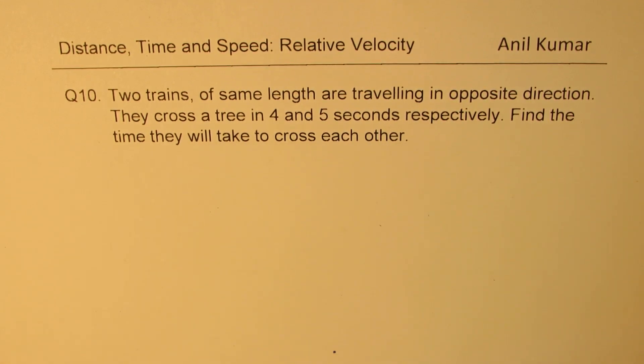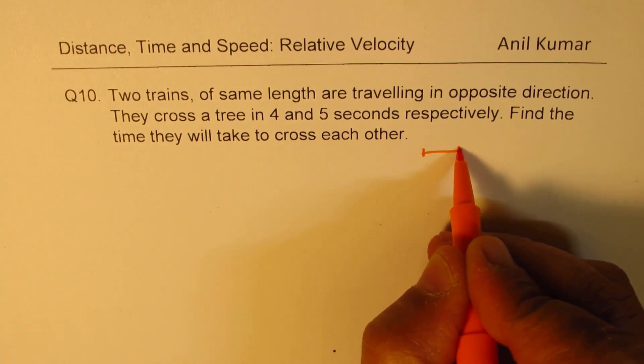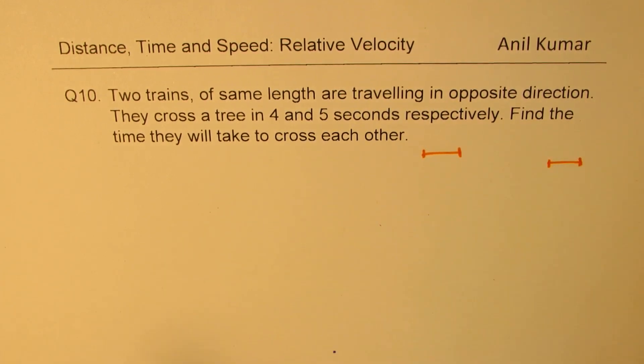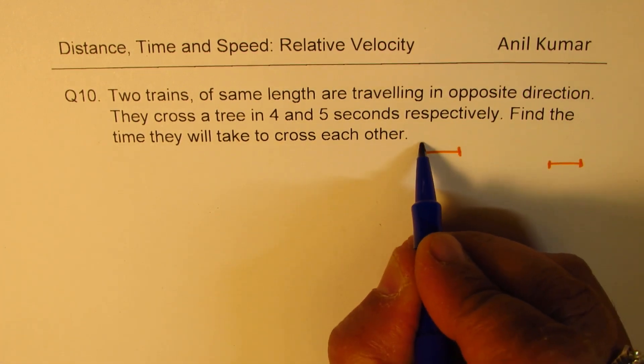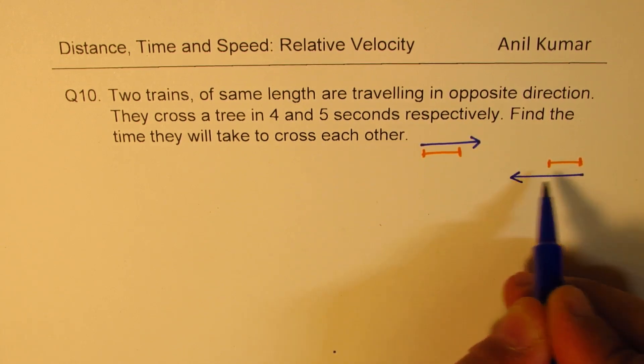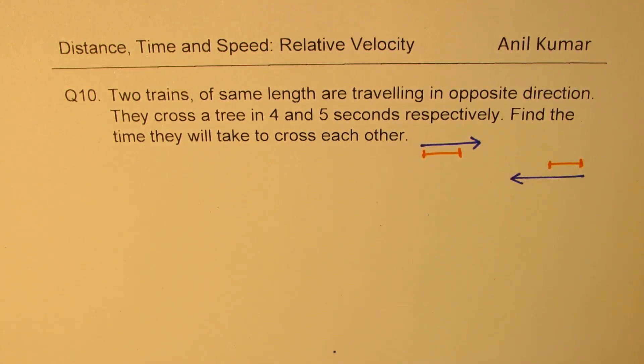That's interesting. So we have two trains. Let's say this is length of one train, and that is the length of the other train. Now they are traveling in opposite directions. So this train is going in this direction, the other one is coming in that direction.